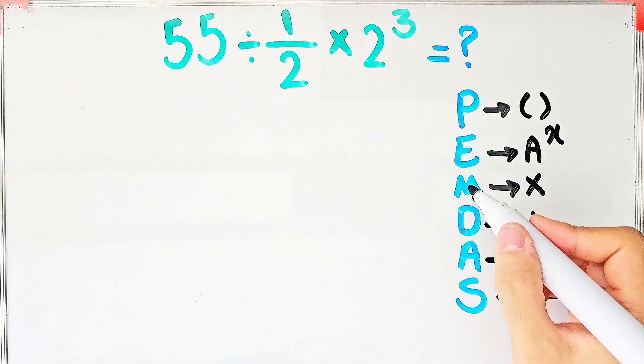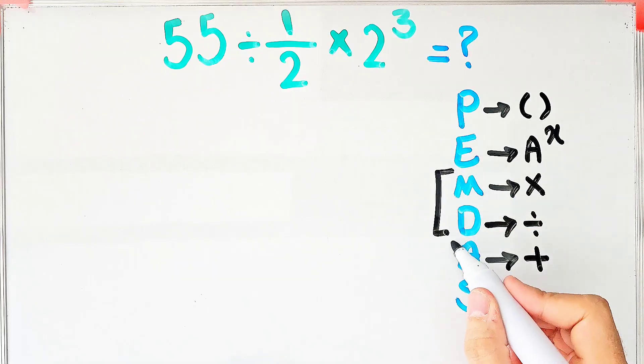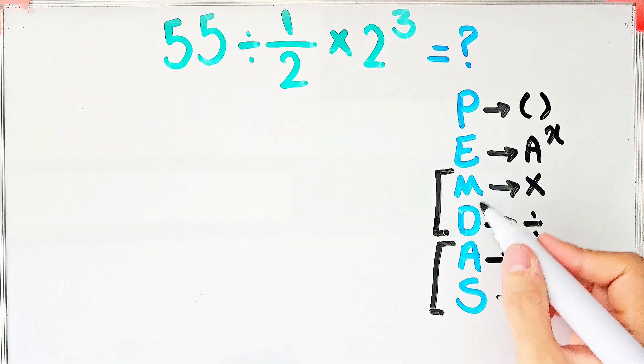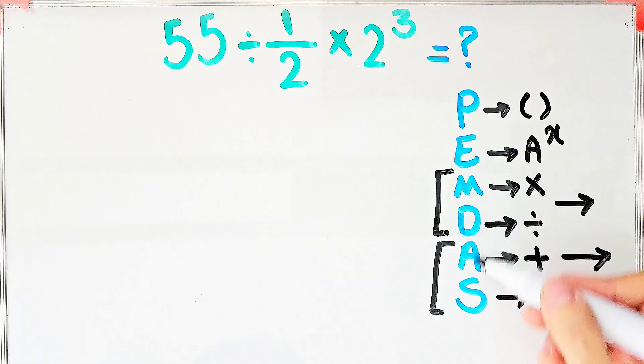Multiplication and division have the same level of priority. Also, addition and subtraction have the same priority. When we have both in an expression, we start from the left and simplify the question.